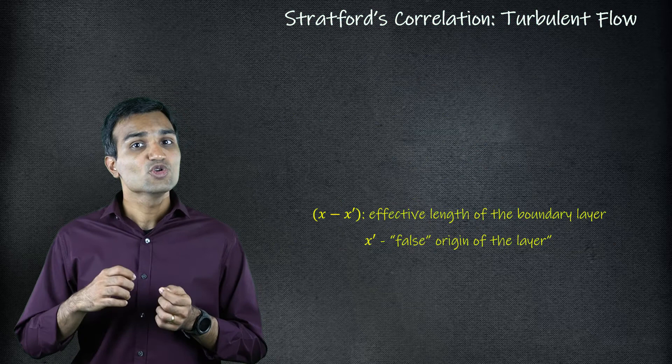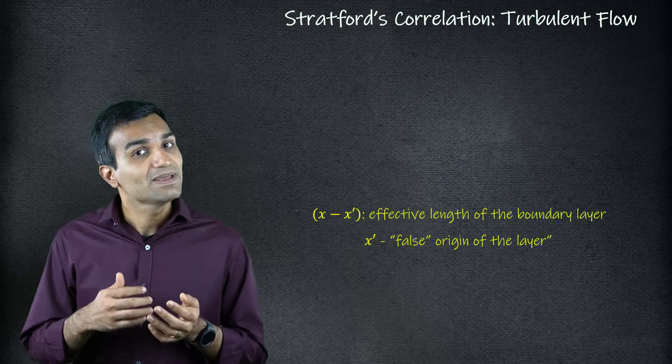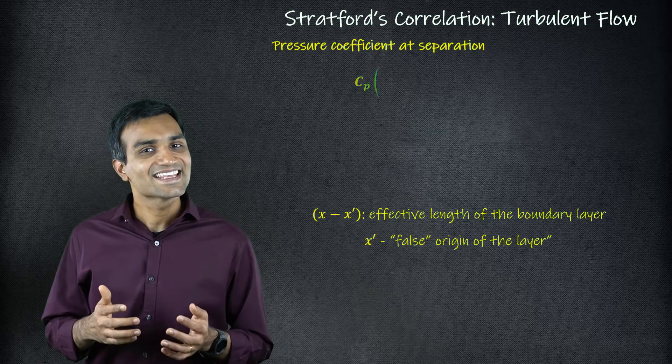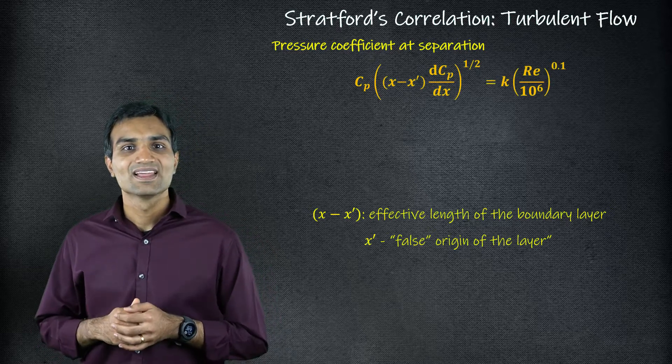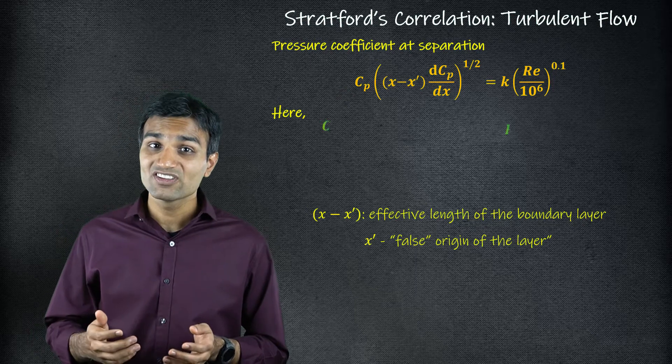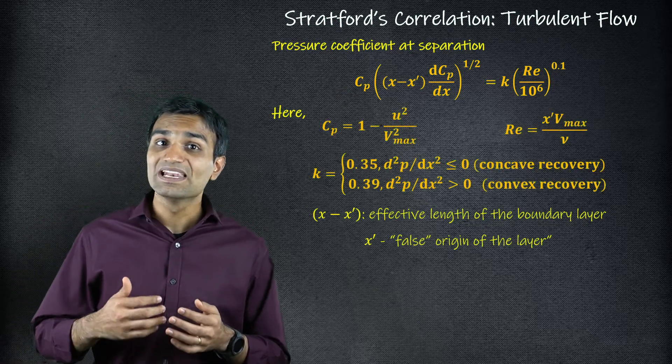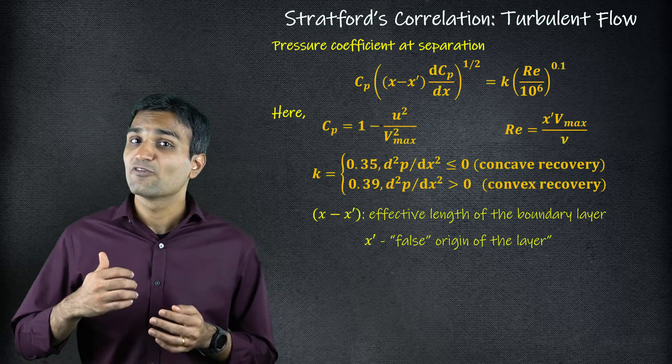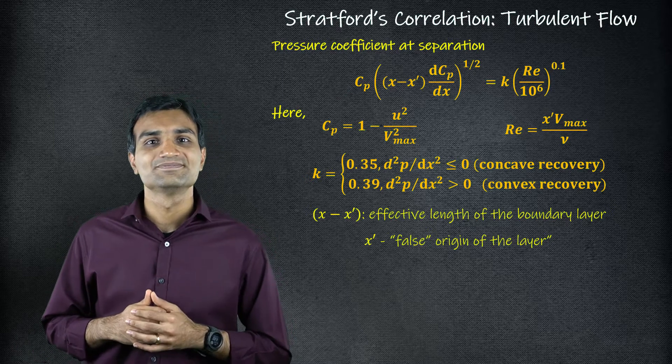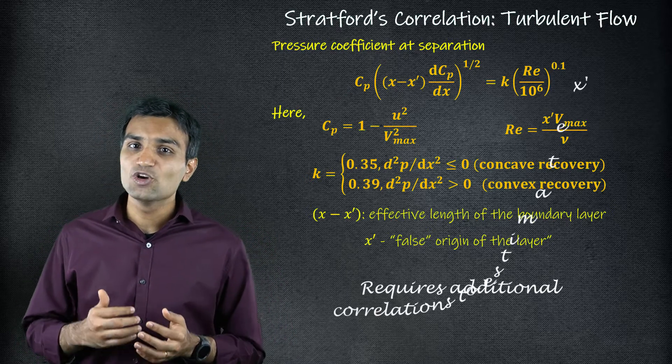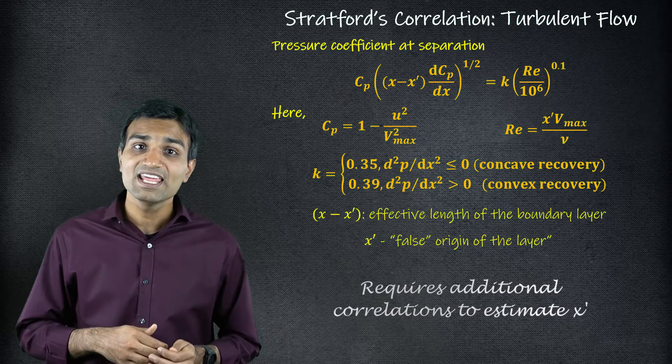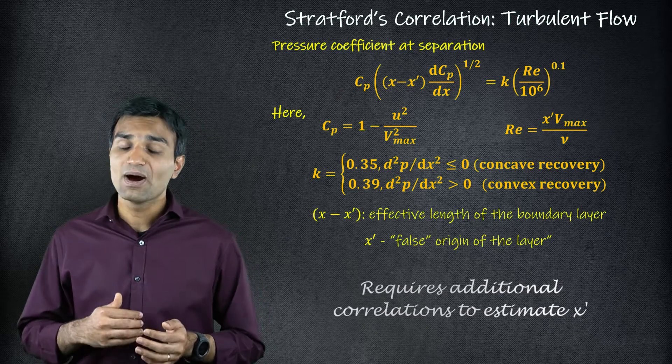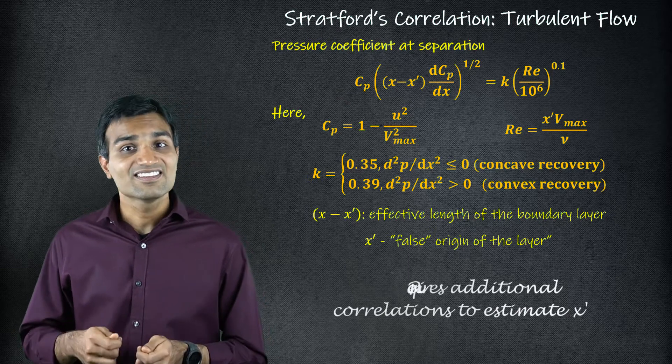This solution can be extended to turbulent boundary layers. In this case, at the minimum pressure point x equal to xm, the velocity profile is approximated to that of a turbulent flat plate starting from a false origin x-prime. Determining the value of x-prime is tricky and requires additional correlations depending on whether the flow in the boundary layer is laminar, transitional, or turbulent.